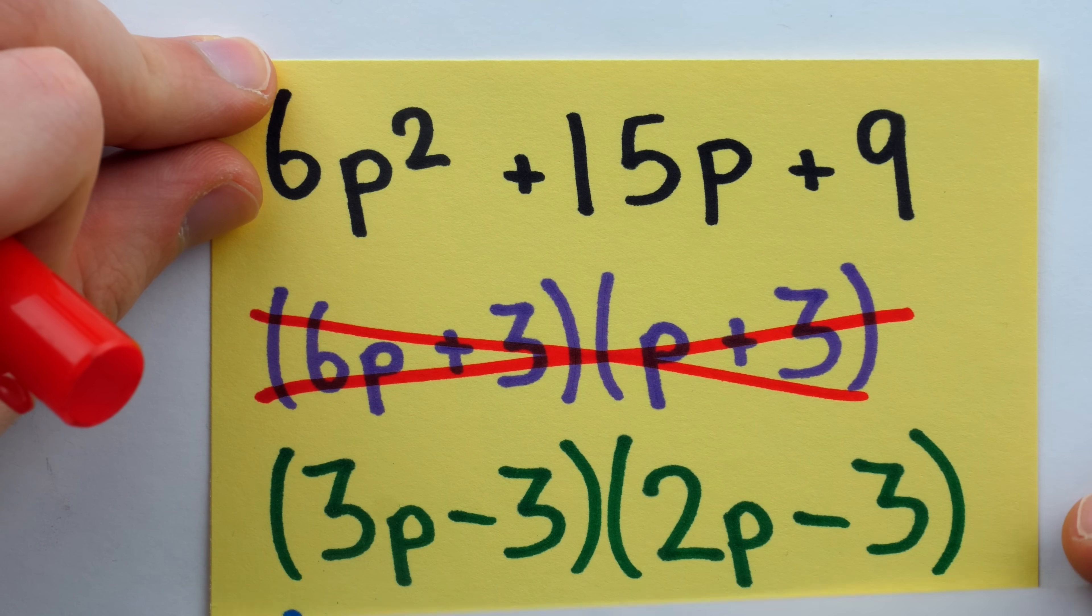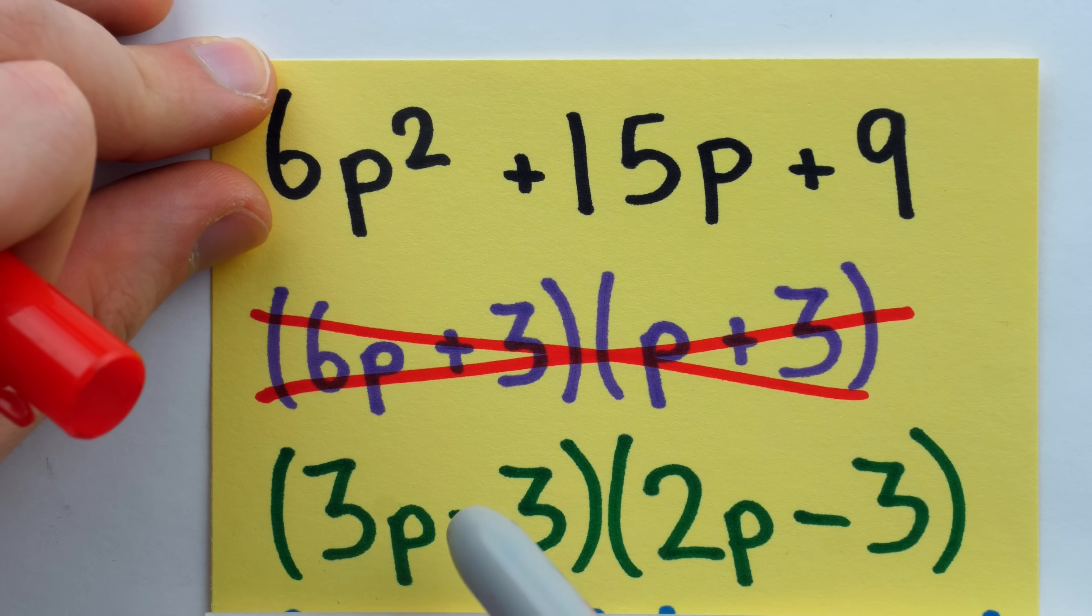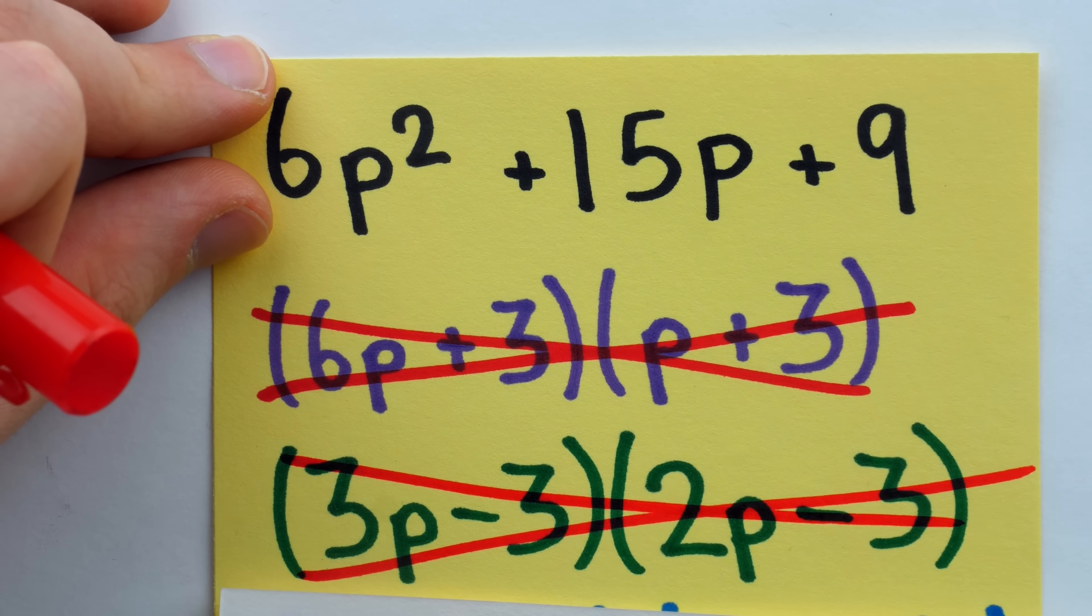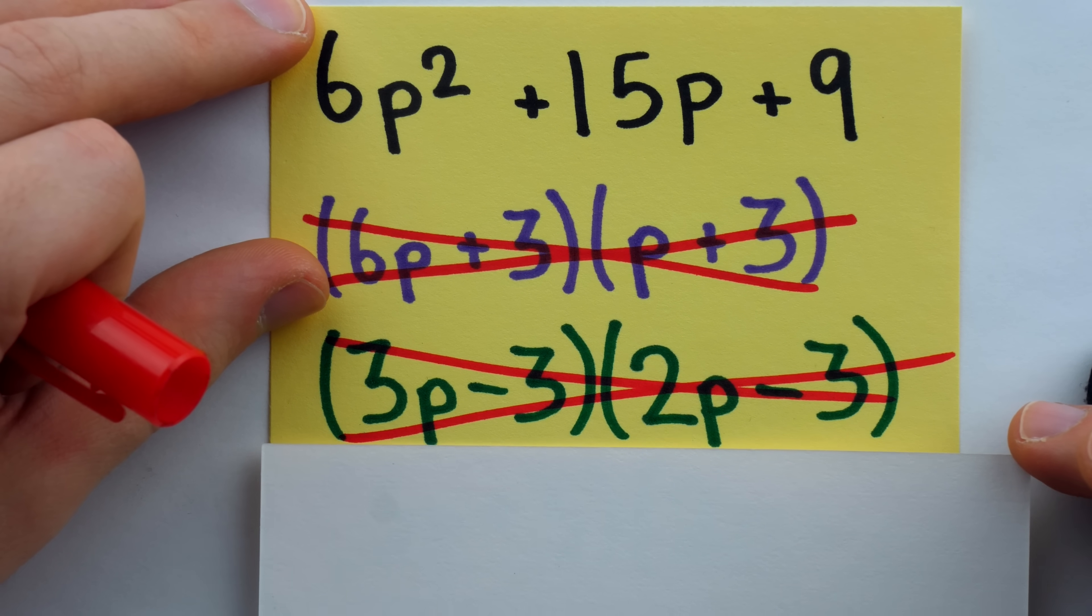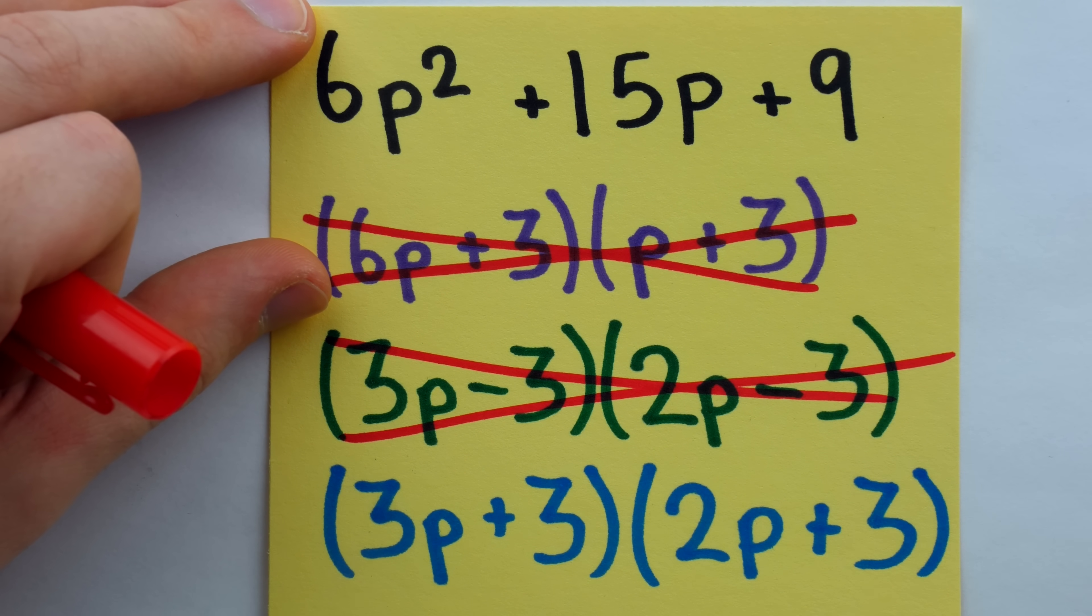Then we have to come up with another idea. Maybe we try 3p minus 3 and 2p minus 3. But that's a dumb idea because these numbers are both negative, which means we're going to have a negative p term in the middle. Okay, so that doesn't work either. After enough attempts charging forth with the heart of a lion, you may arrive at the correct factorization, but the guessing and checking is a bit of a pain.